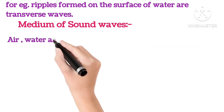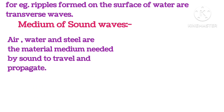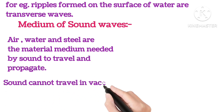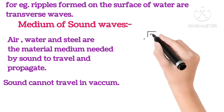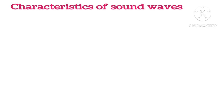Medium of sound waves: Air, water and steel are the material mediums needed by sound to travel and propagate. Sound cannot travel in vacuum. As you can see in the picture, if we take an electric bell and hang it inside an airtight bell jar connected to a vacuum pump, you can hear the sound of the bell on pressing the switch. But if the air is pumped out of the jar and a vacuum is created, you cannot hear the sound of the bell on pressing the switch. This shows that sound cannot travel in vacuum.